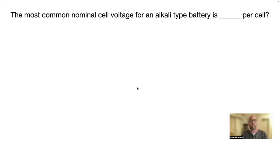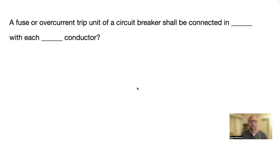Next one, the most common nominal cell voltage for alkali type battery is blank per cell, 1.2 volts. And that's in 480.2 informational note. Let's go over another one.